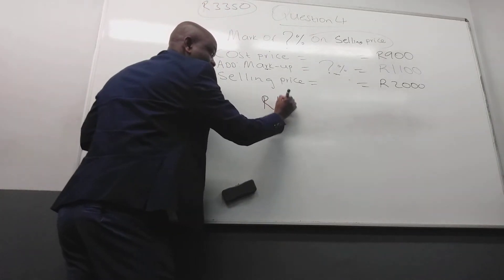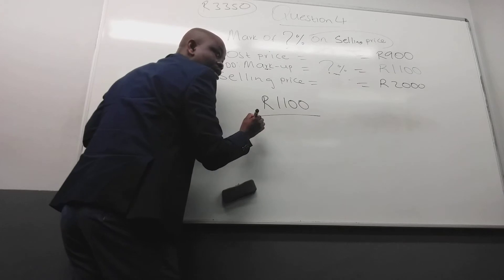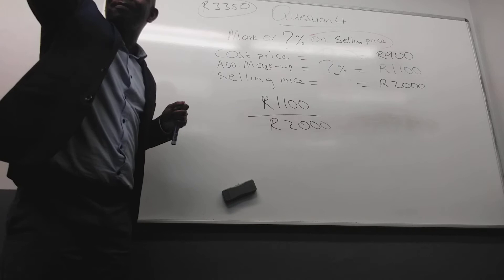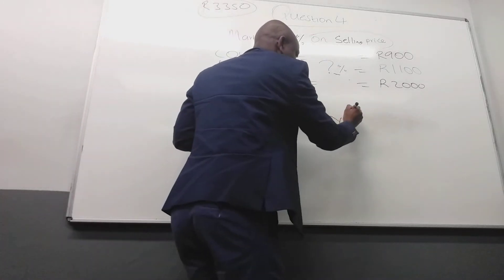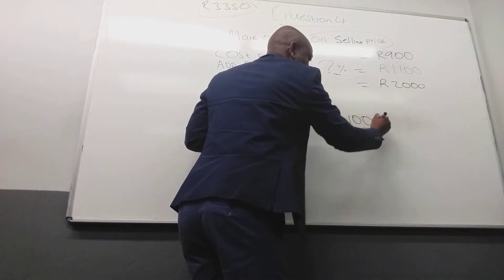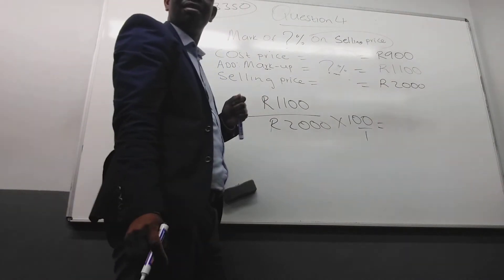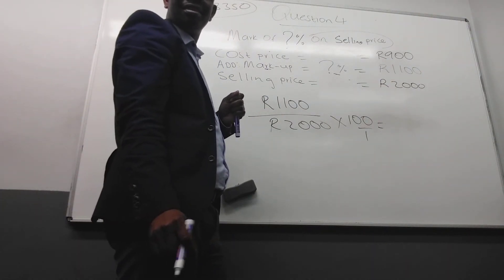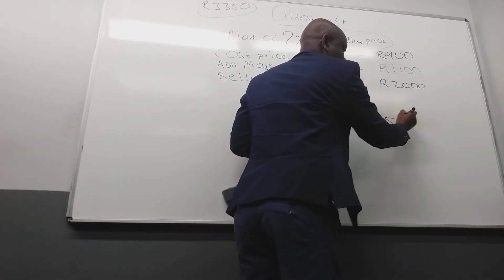1,000 over, you are on fire. Can you see that, on selling price times by? How much you get? Percent.